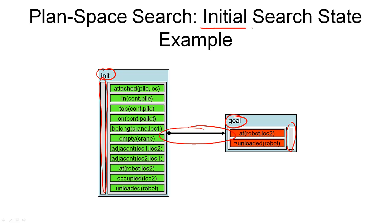I hope you're not getting confused with the initial search state here. We distinguish the initial state that is part of our planning problem — a world state consisting of all ground atoms — and the initial search state, which is the state from which we start our search, in this case a partial plan. The two have nothing to do with each other, although they are both initial states in some way: one is the initial state in the world state space, and the other is the initial state in our search.